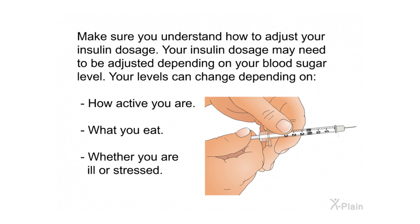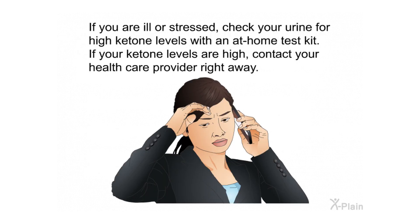Make sure you understand how to adjust your insulin dosage, as it may need to be adjusted depending on your blood sugar level. Your levels can change depending on how active you are, what you eat, and whether you are ill or stressed. If you are ill or stressed, check your urine for high ketone levels with an at-home test kit. If your ketone levels are high, contact your health care provider right away.